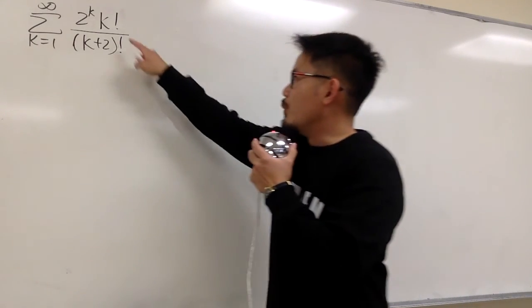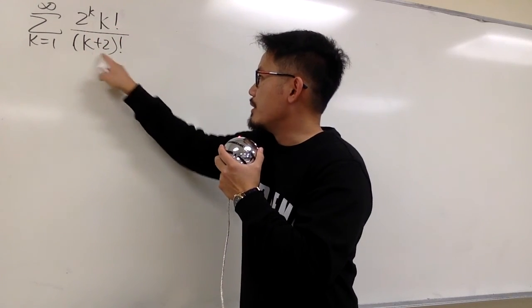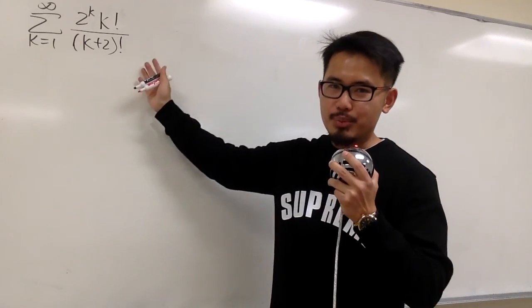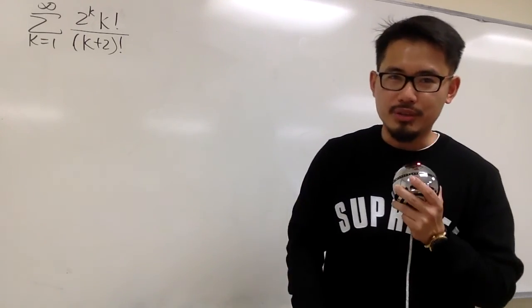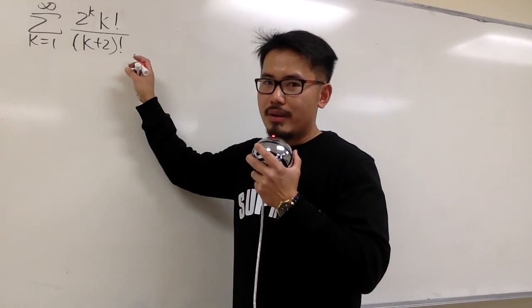But we see we have the k factorial over k plus 2 parentheses factorial, right? We can actually simplify this expression first before we do the ratio test. Let's do that. To do so, we will break down the bigger factorial, which is this one.